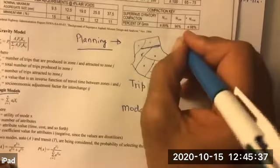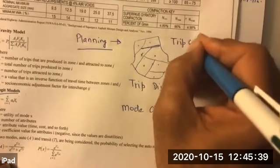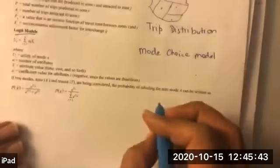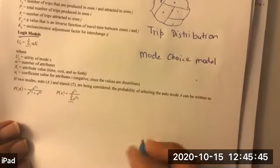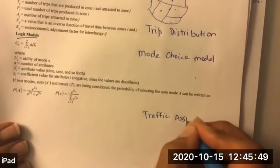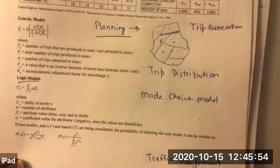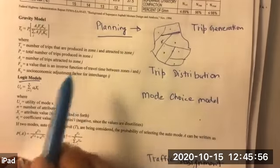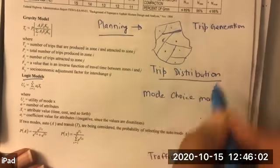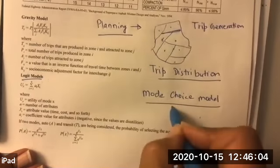The logit model is the third step, which we call the mode choice model. The four-step process is: first, trip generation; second, trip distribution (gravity model); third, mode choice (logit model); and fourth, traffic assignment. We are not covering trip generation and traffic assignment here as they are not part of the FE exam syllabus.